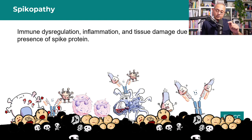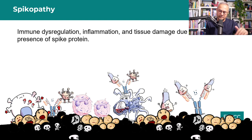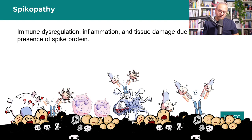Glycocalyx damage can actually detach endothelial cells, which then start circulating in the blood. Studies show that non-dead circulating endothelial cells are found in patients sick with COVID or those with spike pathologies. From left to right in the diagram, you can see various mechanisms by which pathology occurs.